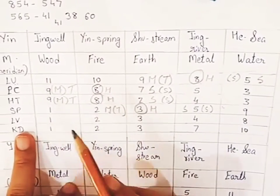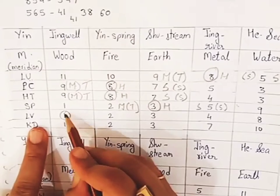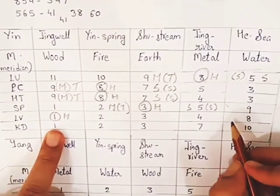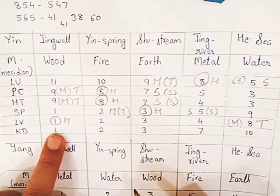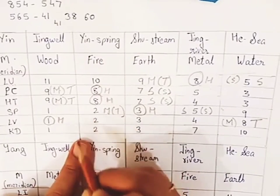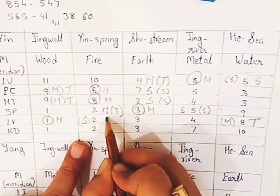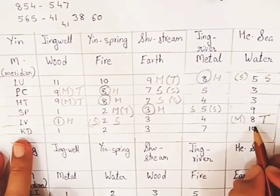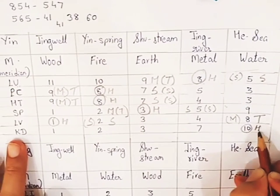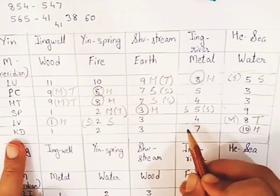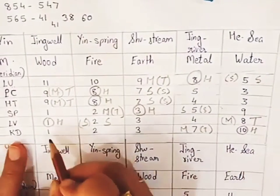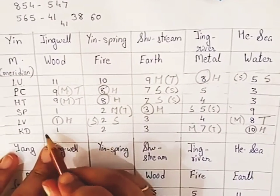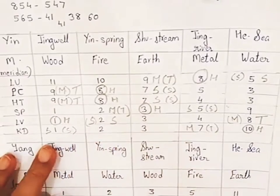For liver meridian, liver is wood element, so liver 1 is the horary point. To find the mother, go to the previous element — liver 8 is the mother point and tonification point of the liver meridian. Liver 2 is the son point or sedation point. Then comes the kidney meridian — kidney is the water element. Kidney 10 is the horary point. The mother point is kidney 7, which is the tonification point. The son of water is wood, so kidney 1 is the son point or sedation point of the kidney meridian.